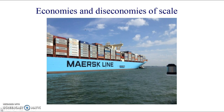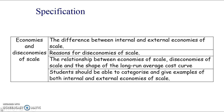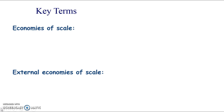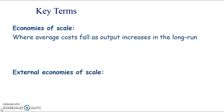Looking at the long run now and what happens to cost, so we're looking at economies and diseconomies of scale, and these are the specification objectives. Key terms: economies of scale — this is where average costs fall as output increases, and this is in the long run.